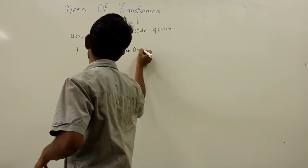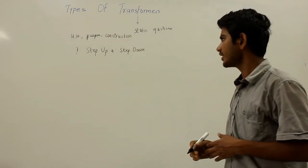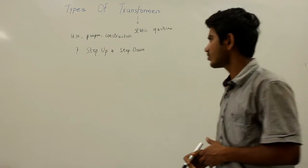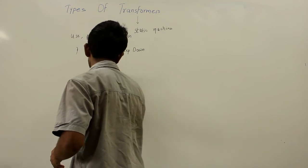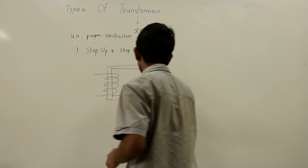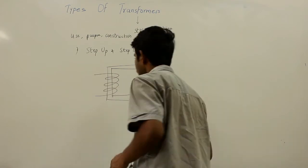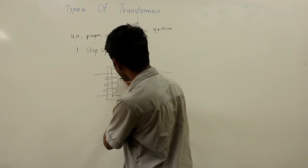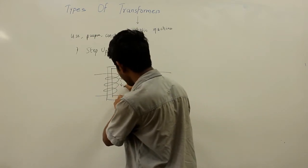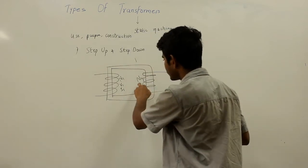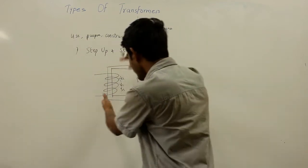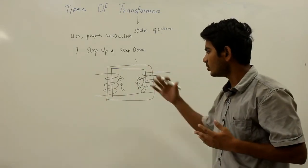Step-up and step-down transformers are used in power system transmission and distribution networks for stepping up or stepping down the voltage level of power. If we consider the iron core with a primary winding and secondary winding, the more the number of turns n1 and n2, the more the voltage and the less the current. The fewer the turns, the less the voltage and the more the current. By changing the number of turns you can either step up or step down the voltage levels.